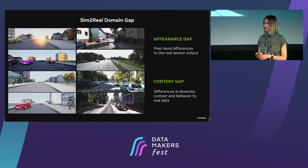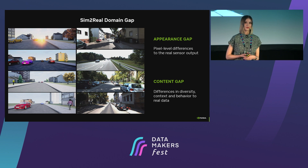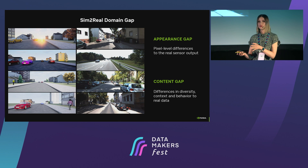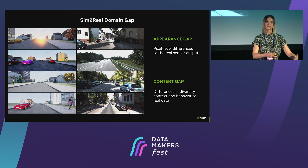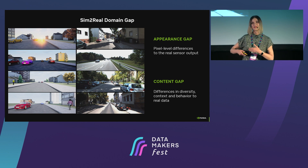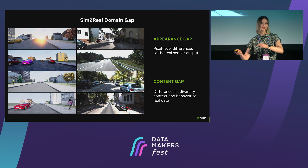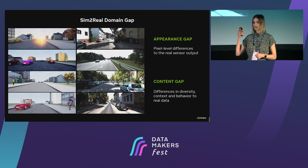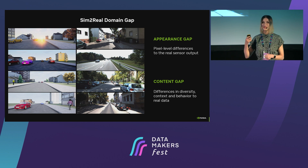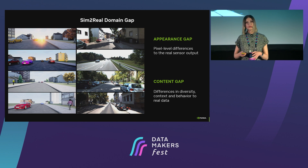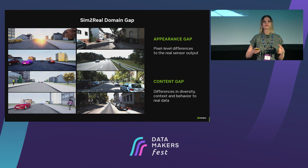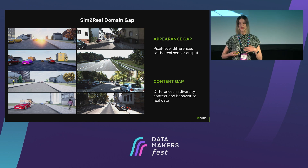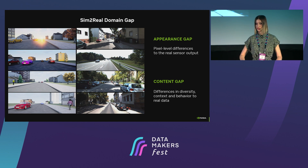One thing to consider when training with synthetic data is the so-called sim-to-real domain gap — the difference between two domains. It also applies to real data: if you train an autonomous vehicle in the countryside, you cannot use that model if the vehicle is going to drive in an urban environment like New York. Applied to AI and synthetic data, we have two kinds of sim-to-real gaps. The first is the appearance gap — pixel-level differences to the real sensor output, including differences in object shape, textures, and how objects look, as well as differences in rendering system capabilities. The second is the content gap — differences in diversity, context, and behavior compared to real data.